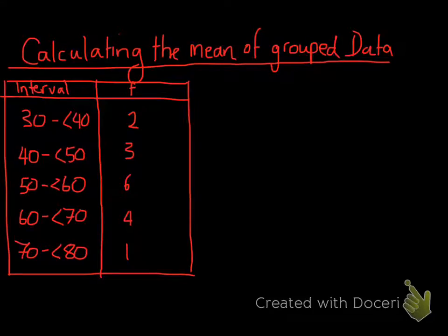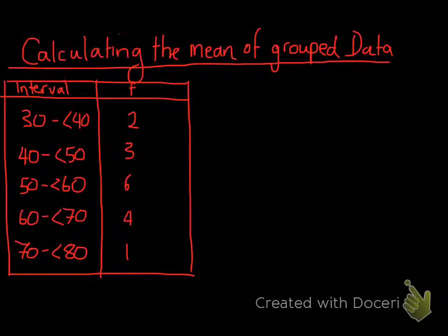Here I'm going to show you how to calculate the mean of grouped data. For those of you who don't remember what the mean is, basically it is — if you have a set of data values — adding up all of the data values and dividing by however many data values there are.